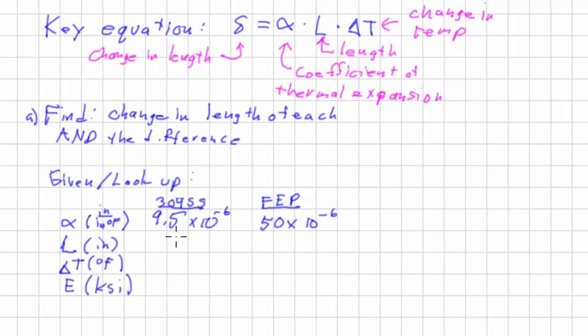Okay, so we're given our initial length. The stainless steel is 10 inches, the FEP is 9 inches.